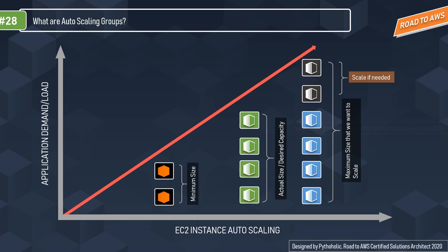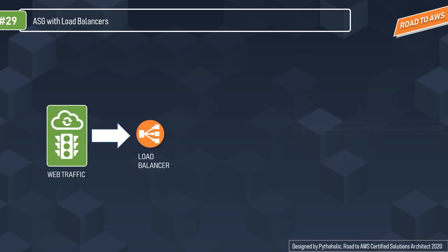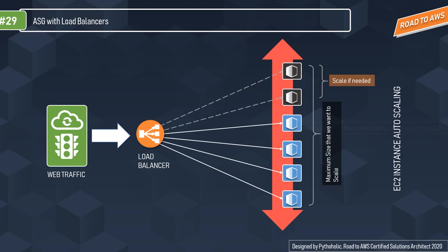Auto scaling groups can also work alongside load balancers. Web traffic comes in through the load balancer which directs traffic to instances. With auto scaling groups in place, if the load increases and ASG adds more instances, those new instances automatically get registered into the auto scaling group and in turn are managed by the load balancer to redirect traffic effectively. Four instances are already managed by the load balancer, and when the auto scaling group scales up two additional instances, they automatically get registered into the target groups and managed by the load balancer.